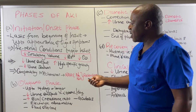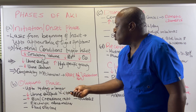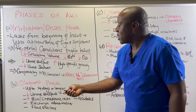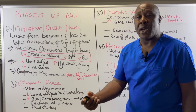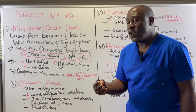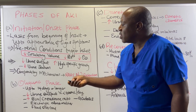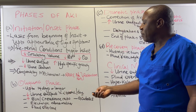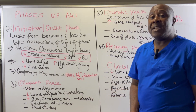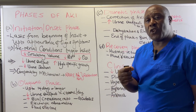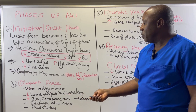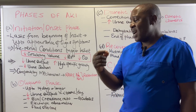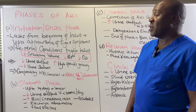When these compensatory mechanisms fail, we enter the oliguric phase of acute kidney injury. The word oliguric comes from oliguria, meaning decreased urine production. During this oliguric phase, we have decreased urine production of less than 400 milliliters per day. In 24 hours, these patients can only produce less than 400 milliliters of urine — that is a drastic decrease in urine production.